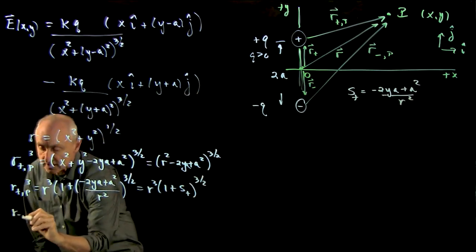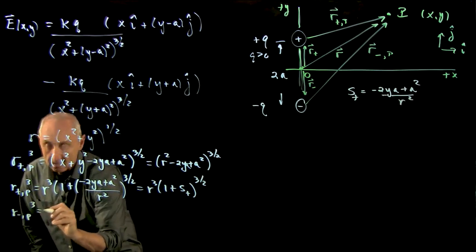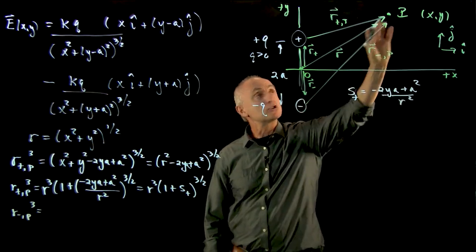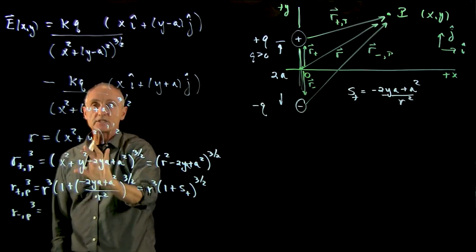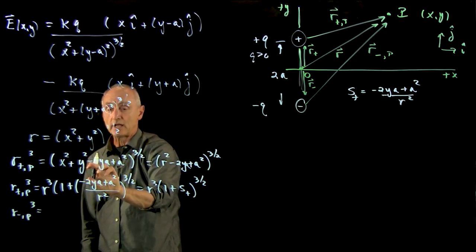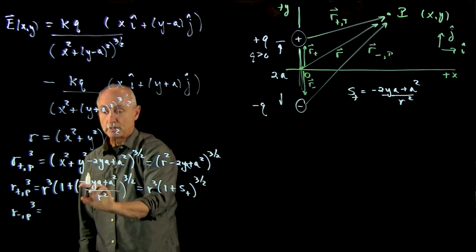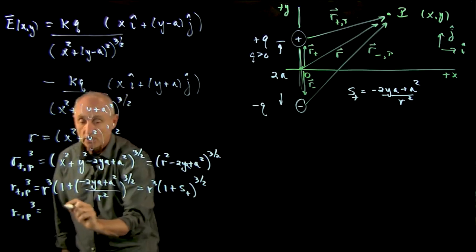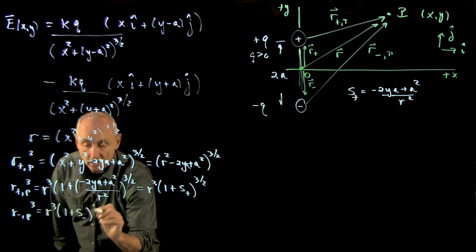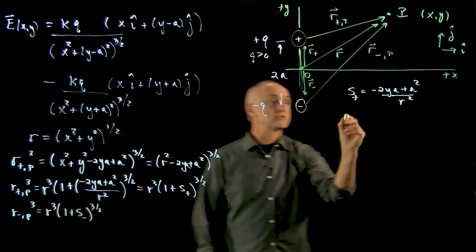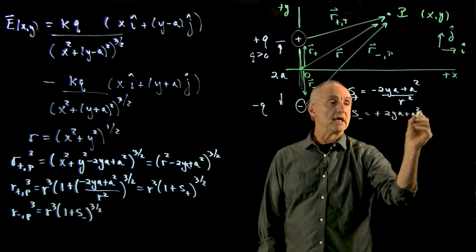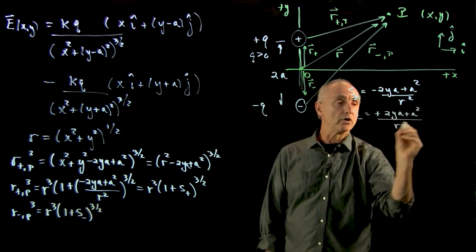Now, when I look at r_minus_p cubed, that's this denominator here, which is the distance from the minus charge to the plus charge. Everything is exactly the same, except when I do the square here, instead of having a minus sign here, I'll have a plus sign. So I'll call this s_minus. So I'll write this as r cubed times 1 plus s_minus to the 3 halves. And the only difference in this calculation is that s_minus is plus 2ya plus a squared all over r squared.